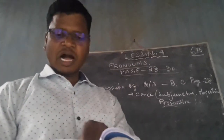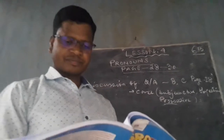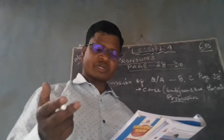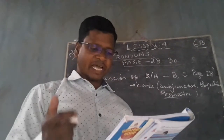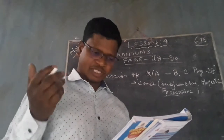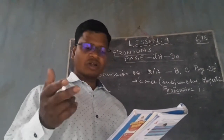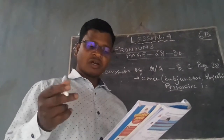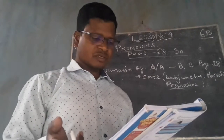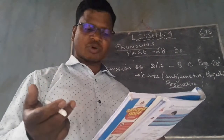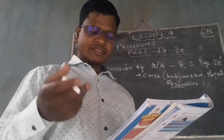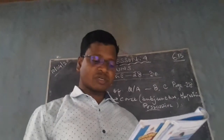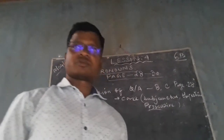See the words which are written in color. In the first sentence, 'he' is the subject. When a pronoun is the subject or the doer of the action, it is the subjective or nominative case. In the second sentence, 'me' is the object — when a pronoun is the receiver of the action it is called the objective case.